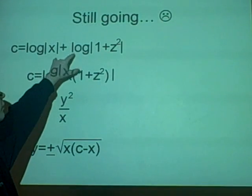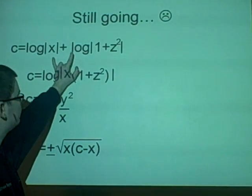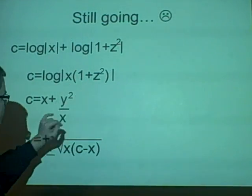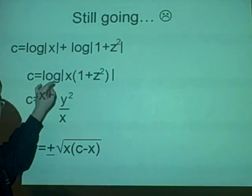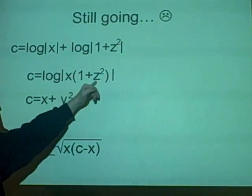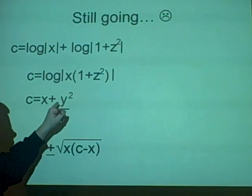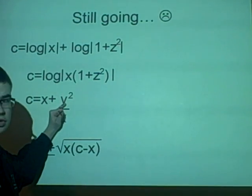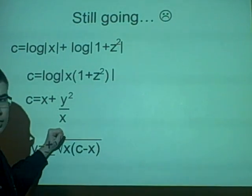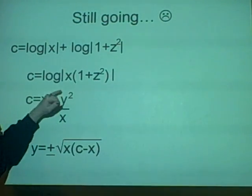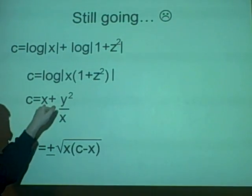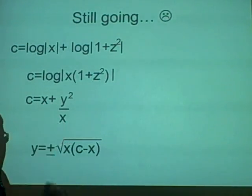So now, when we have addition in logs, it means they multiply together, so that's what we've done here, and then I've just put it to the power e to get rid of the log, and multiplied it out which gives me x plus, and it did give me x z squared, and z squared is y squared over x squared. Because there was an x on top from here, it cancelled with the bottom one, so we're just left with c equals x plus y squared over x.